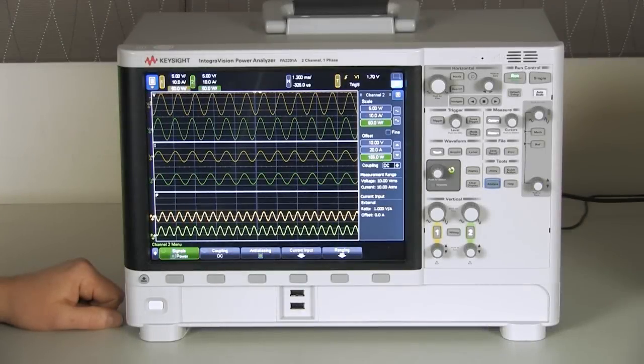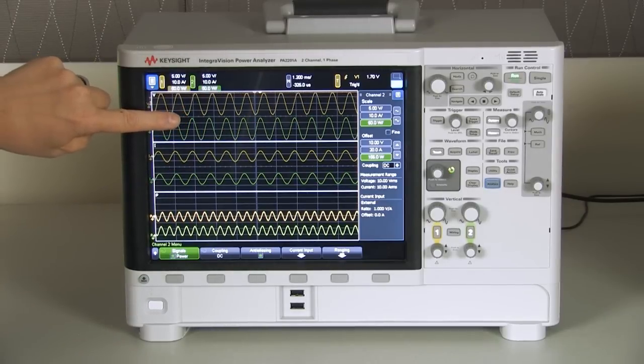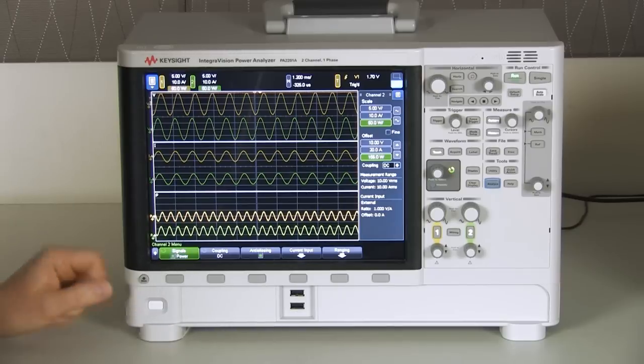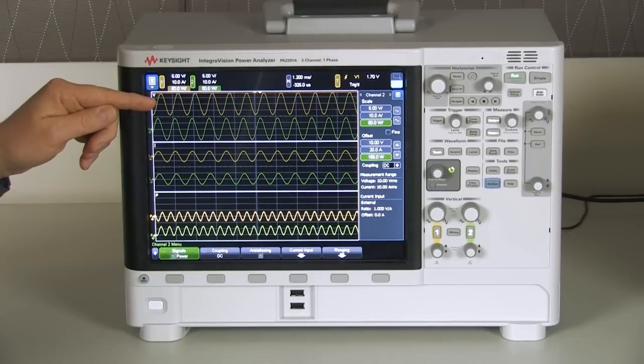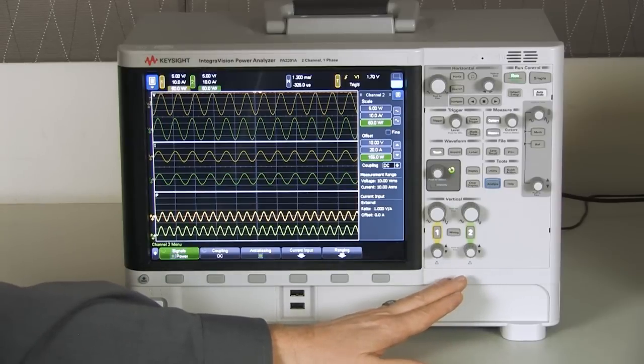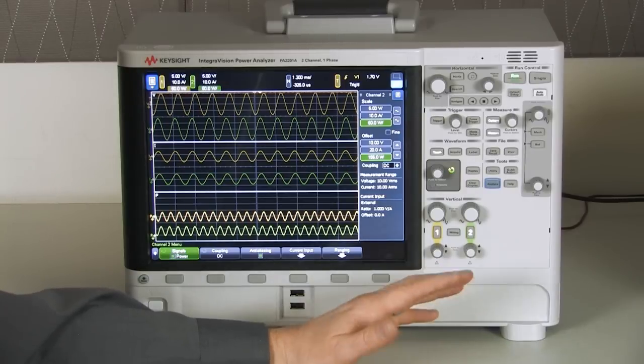When we look at the front of the IntegraVision power analyzer, the first thing you'll notice is the large 12.1 inch touch screen display. We have voltage, current, and power all displayed on a single screen. You can see channel 1 is in yellow and channel 2 is in green. On the right side of the instrument, you'll see a number of knobs that look like any oscilloscope.